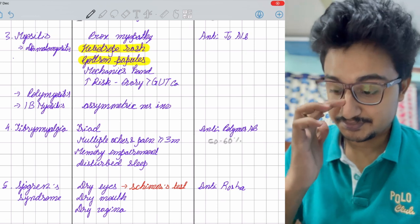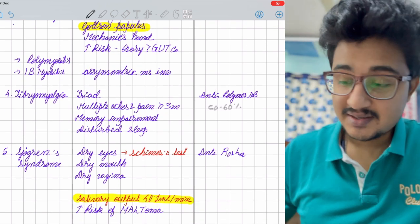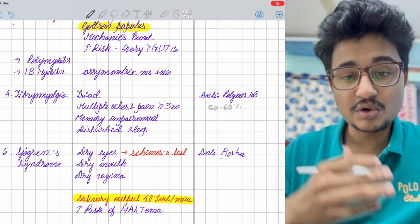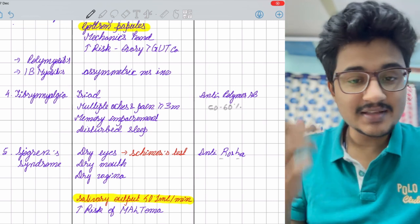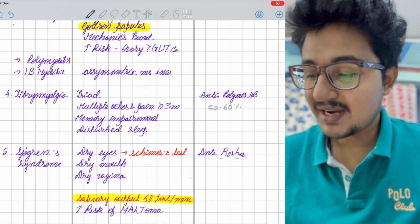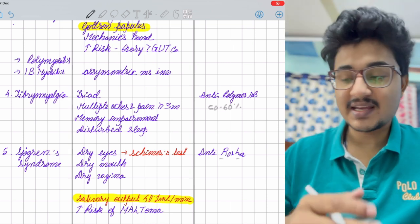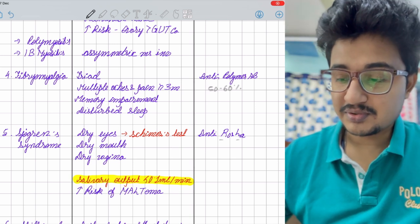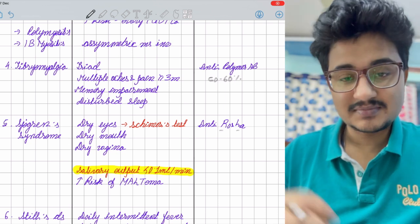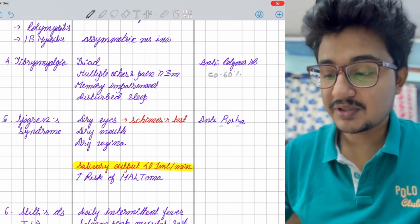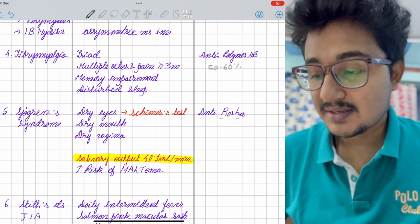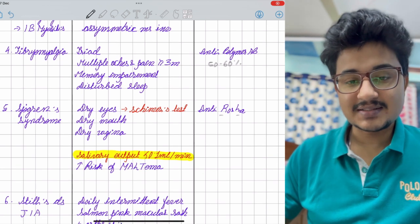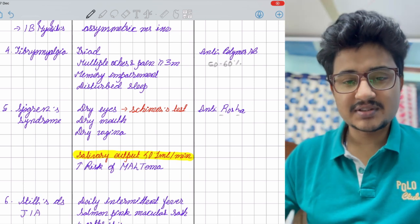Sjogren's syndrome presents with dry eyes, dry mouth, dry vagina. The antibodies are anti-Ro and anti-La. You can remember that he cannot cry, so anti-Ro, anti-La. Schirmer's test is done for the eyes to check tear production. Salivary output less than 1.1 ml per minute is the criteria for Sjogren's syndrome. This was asked in NEET. There's increased risk of MALT lymphoma developing in parotid glands due to lymphocytic infiltration.